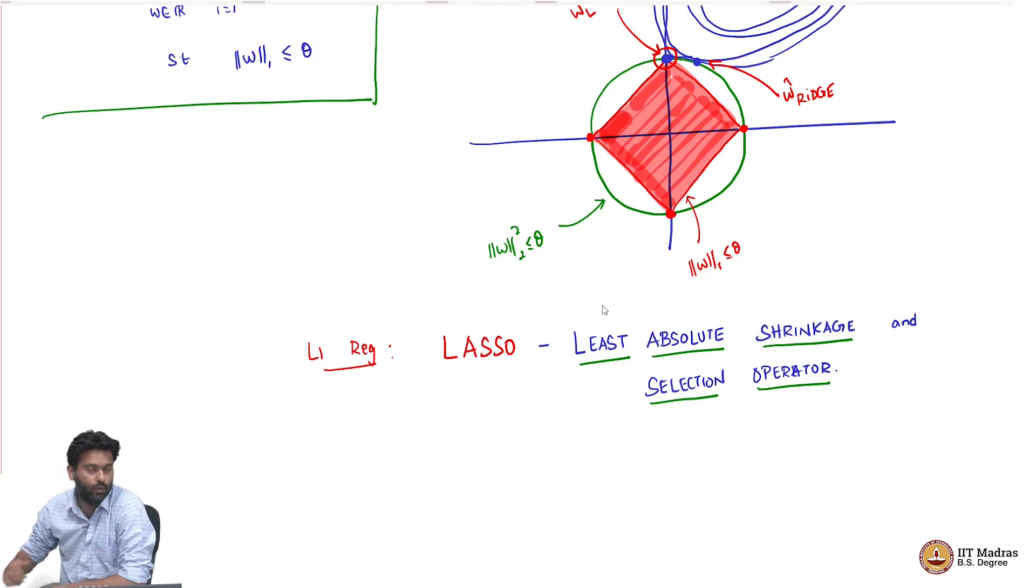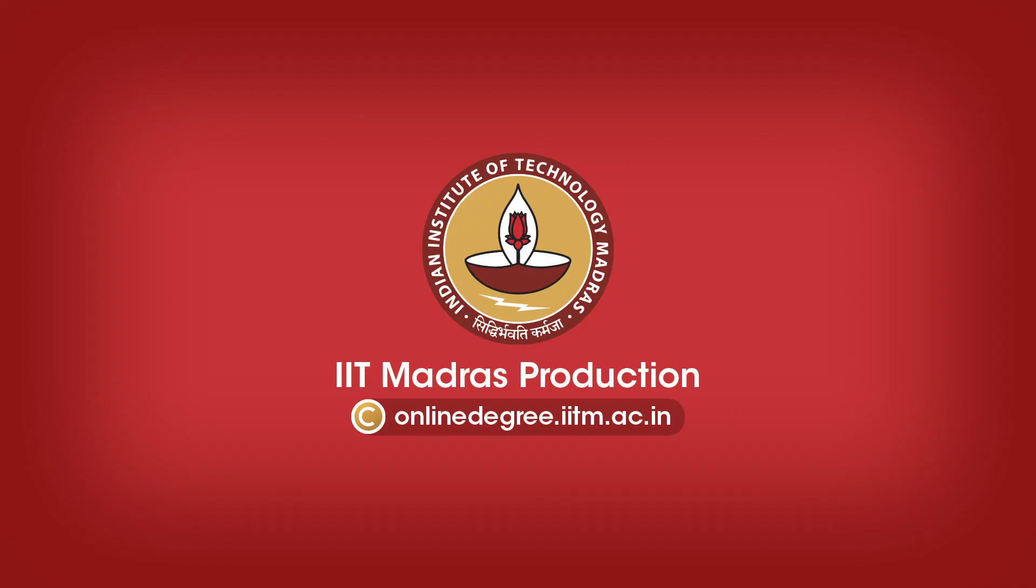This is also very popularly used to solve the linear regression problem, especially when you have a lot of features, when you hope that most of these features are useless or redundant features. Then lasso would kind of push them to exactly 0.